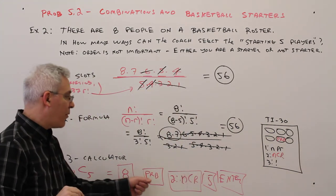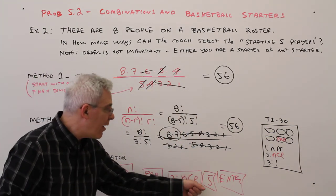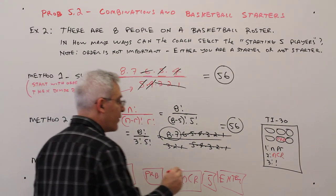So once again, 8, the probability, NCR, 5, Enter, and you should get 56 again.